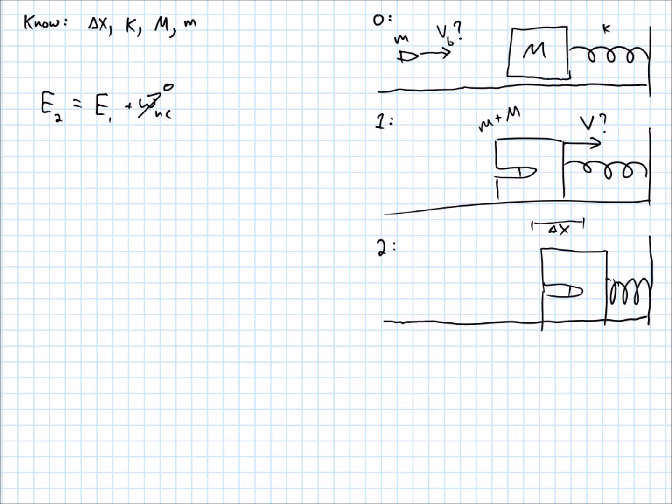There's no change in height in this problem. There's no H, really. So I'm not going to have any gravitational potential energies. I will have kinetic energy, and I will have potential elastic energy. So kinetic energy at 2 plus potential elastic energy at 2 is equal to kinetic energy at 1 plus potential elastic energy at 1.